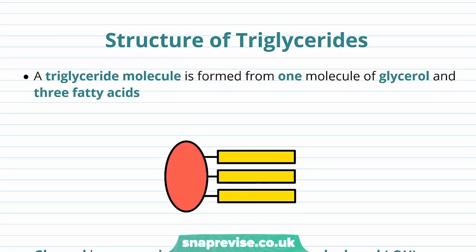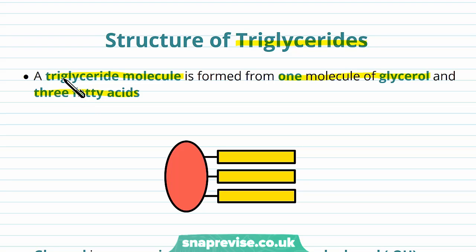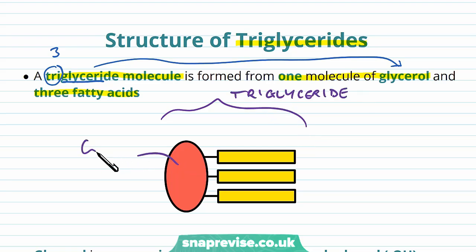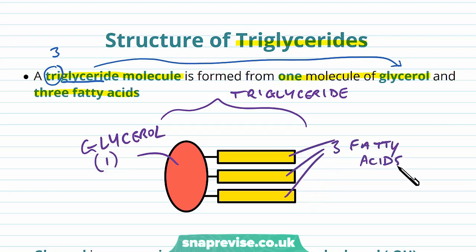Let's talk about the molecular structure of triglycerides — the types of lipids we use to give ourselves a source of energy. A triglyceride molecule is formed from one molecule of a compound called glycerol, connected to three fatty acids. You can work this out from the name: tri means three, and glyceride refers to the glycerol. Looking at this triglyceride molecule, the red structure represents the glycerol — just one molecule — and these three chains represent three fatty acids, which look very much like the long carbon chains we saw previously.